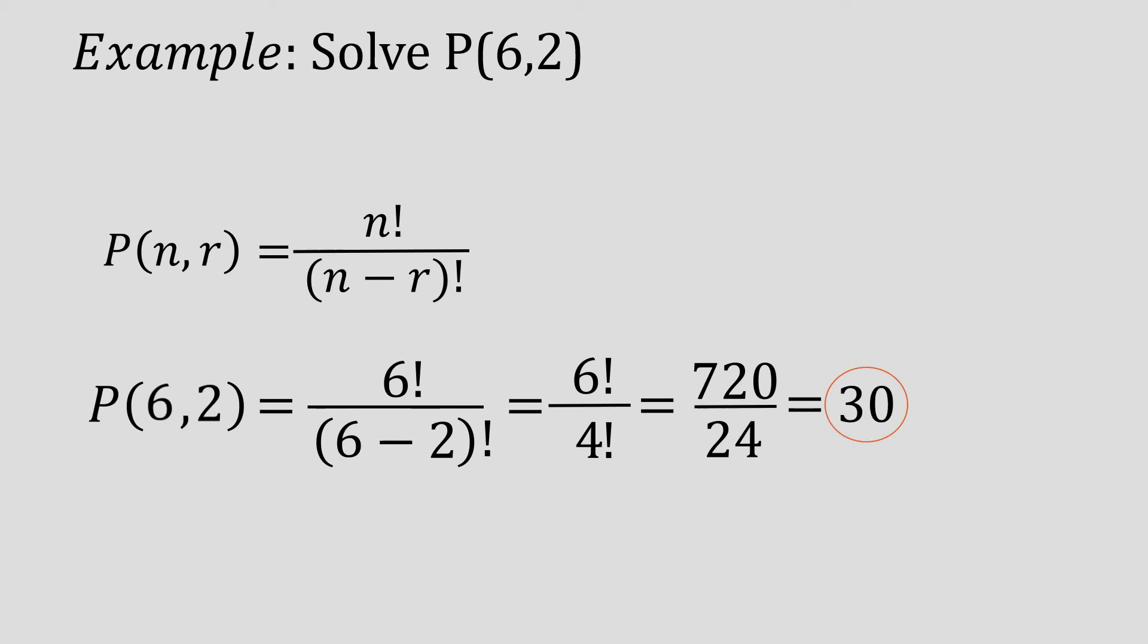Hence, the permutation of 6 taken 2 is equal to 30 ways or 30 arrangements.